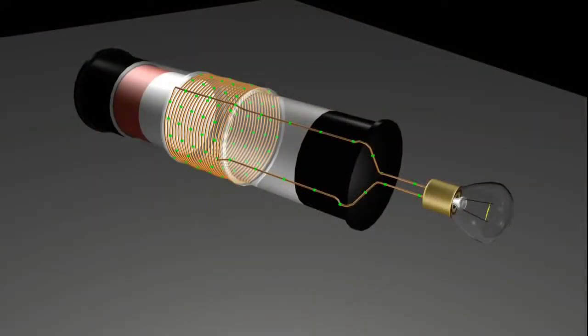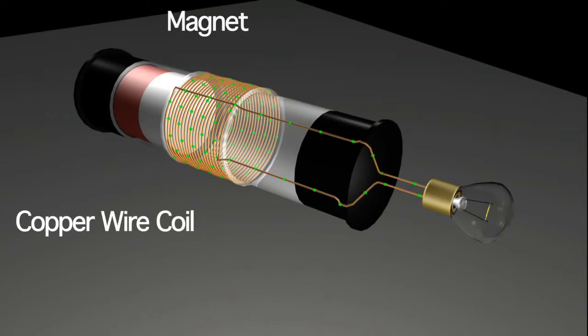Now, let's take a closer look and see what's really going on inside. We are looking at the inner workings of our flashlight. You can see the copper wire coil, the magnet, and the light bulb.